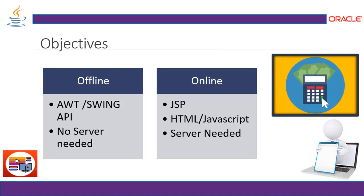The EMI calculator or mortgage calculator is going to be implemented in two ways. First is offline, where we'll use Java with the simple AWT/Swing API — no server deployment needed. For the online version, we need a server and will use Java-based web application development with Java Server Pages, HTML, and JavaScript.